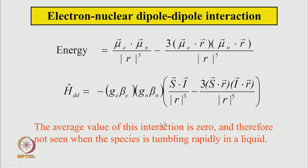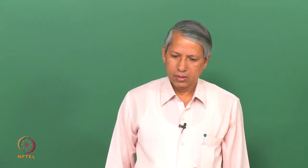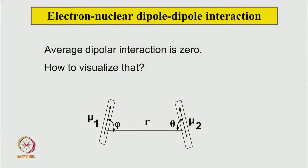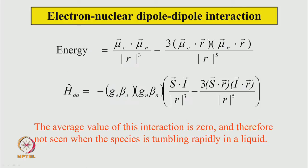This dipole-dipole interaction is such that its average value turns out to be zero. When the species is tumbling rapidly — for example in liquid or gas with atomic collisions — the average value of this energy becomes zero. This is not immediately obvious from the operator expression, but one can calculate that it is indeed zero if all possible orientations are accounted for. Let us try to understand qualitatively why this energy can be zero.